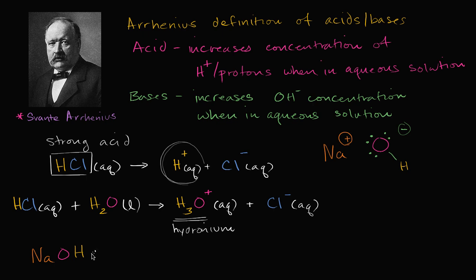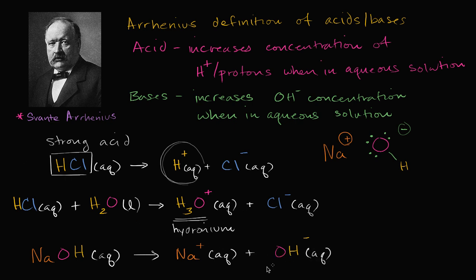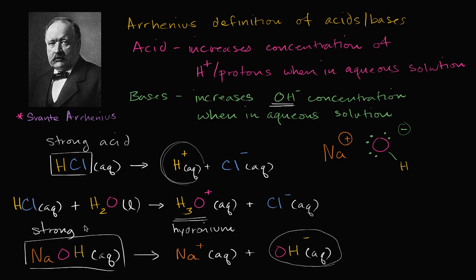When you put sodium hydroxide in an aqueous solution, it will dissociate into sodium ions with a positive charge — still in aqueous solution — and the hydroxide anion, which also remains dissolved in water. So essentially this thing just dissociates. When you throw sodium hydroxide in water, it increases the concentration of hydroxide in the water. By the Arrhenius definition of acids and bases, this would be a strong Arrhenius base.